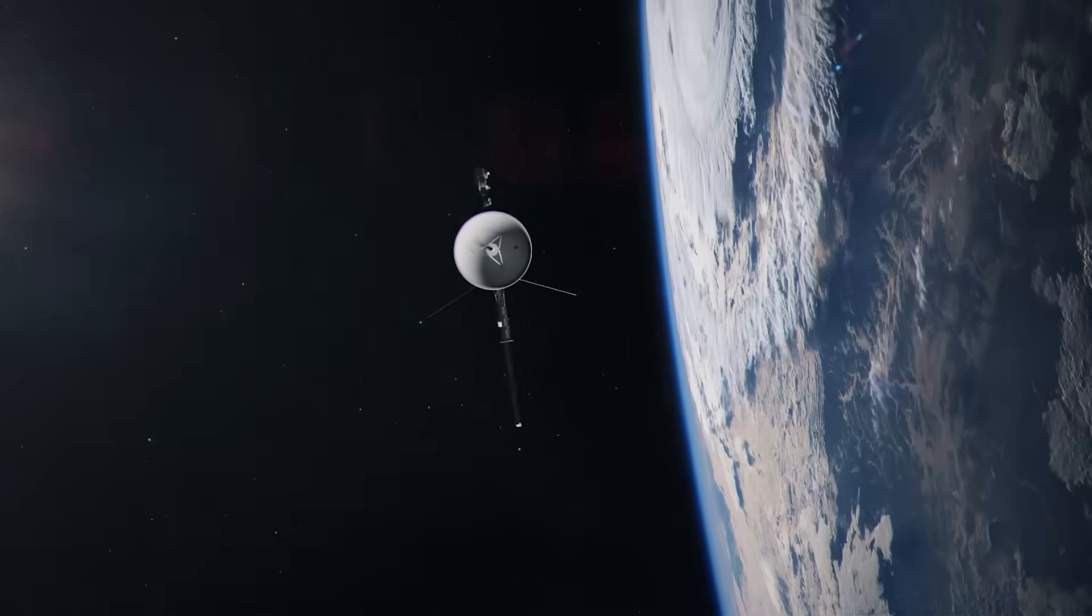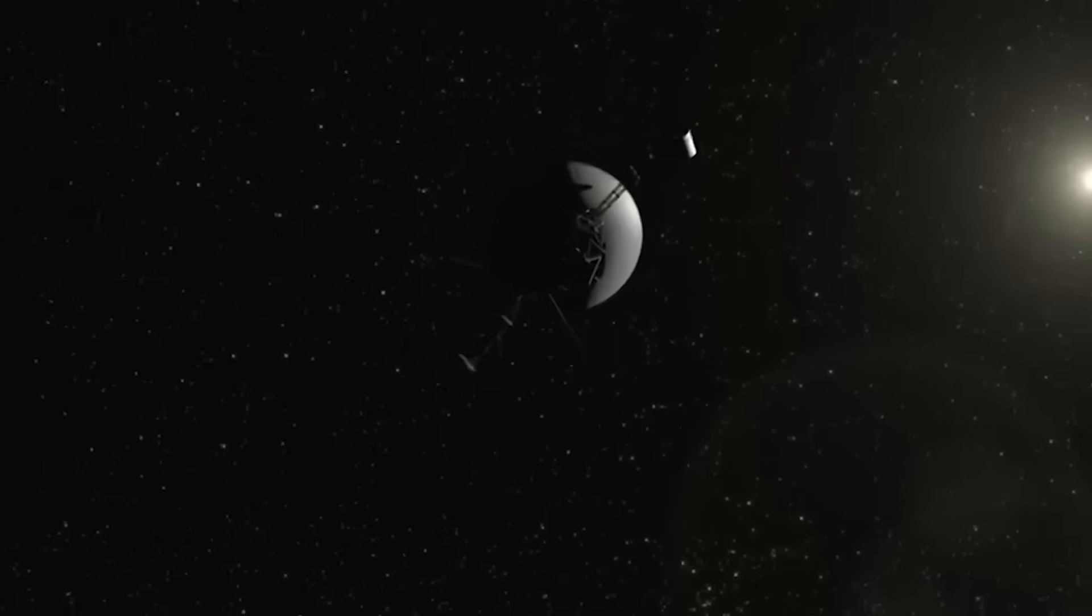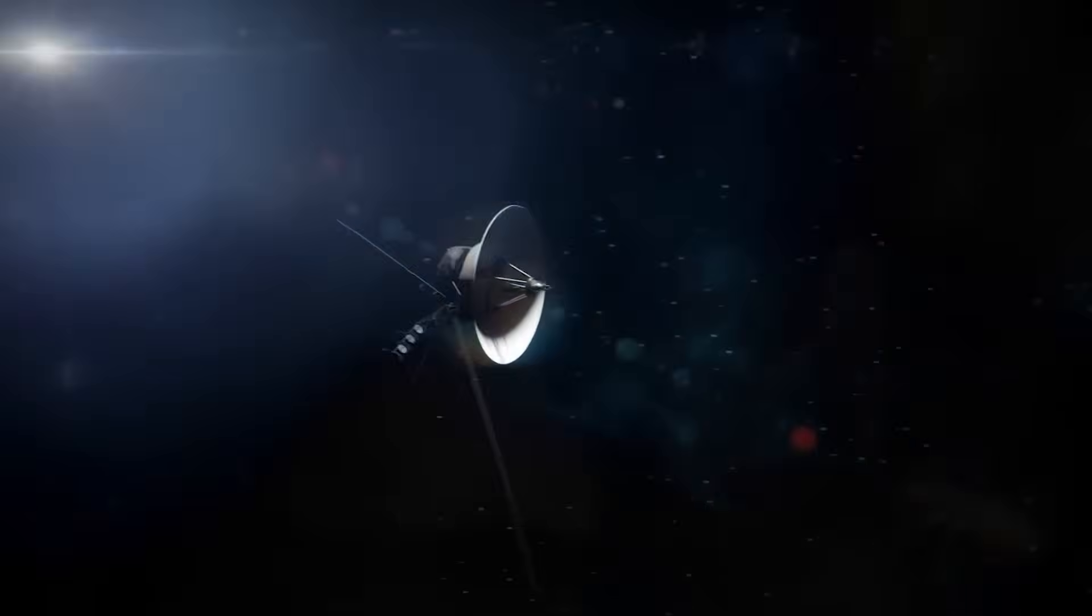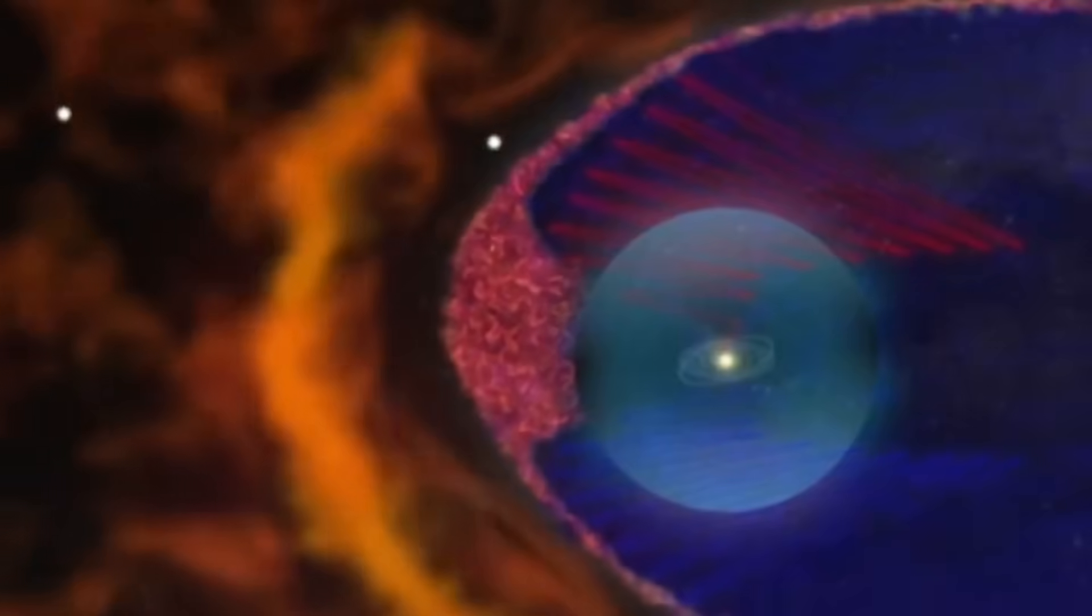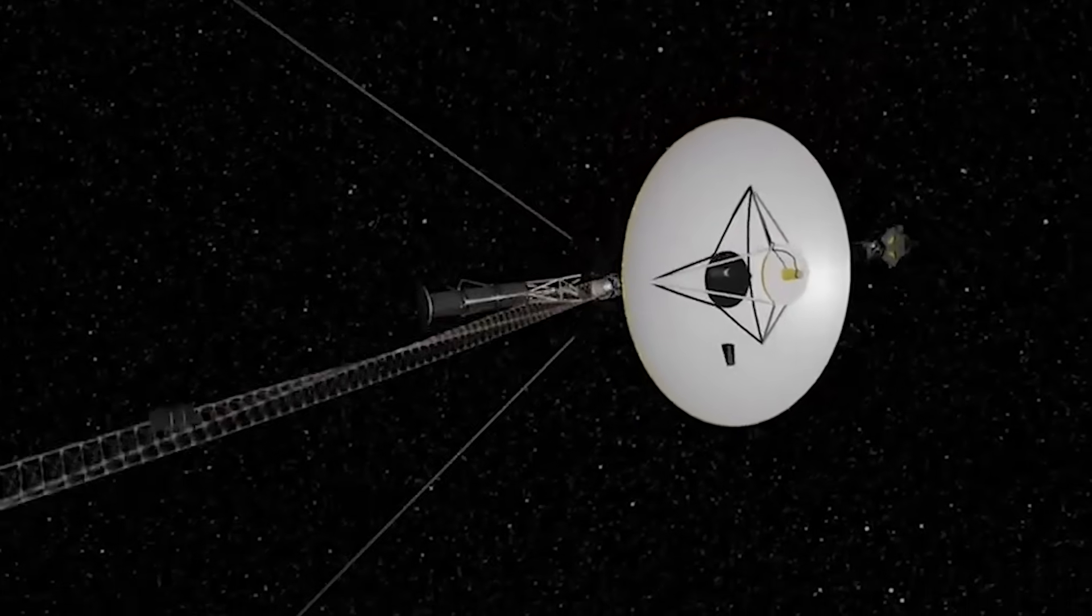For all its age technology, Voyager 1 remains one of the most capable deep space observers ever built. Its instruments, though primitive by modern standards, are perfectly positioned to detect low frequency energy and fine magnetic distortions. And yet, even these systems were being pushed to their limits.